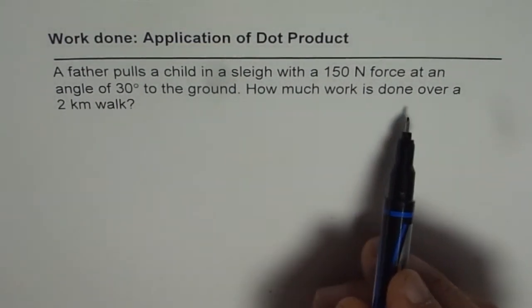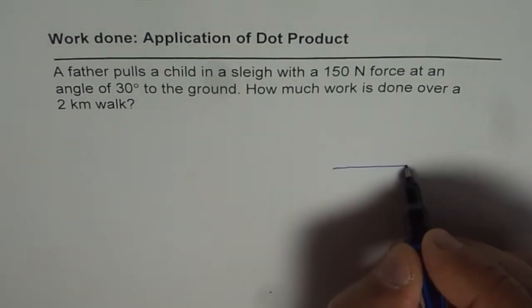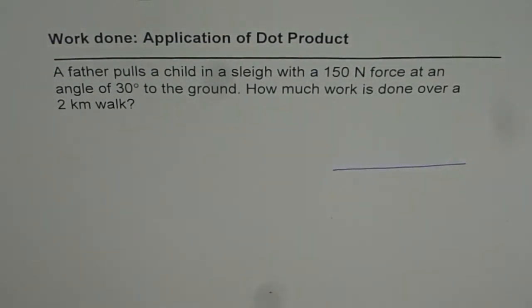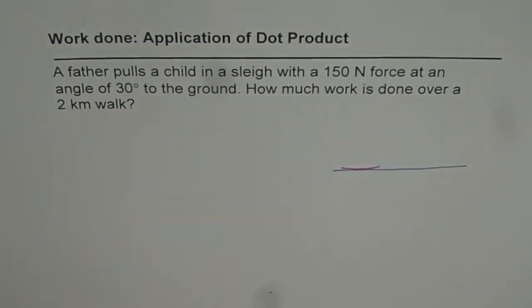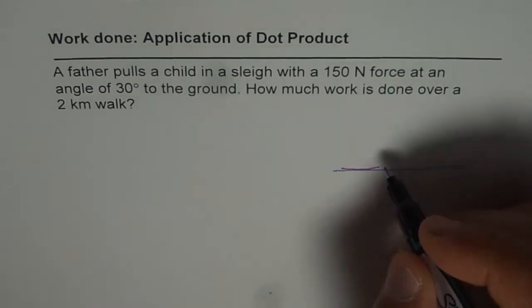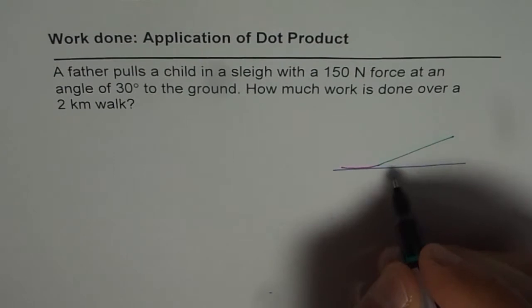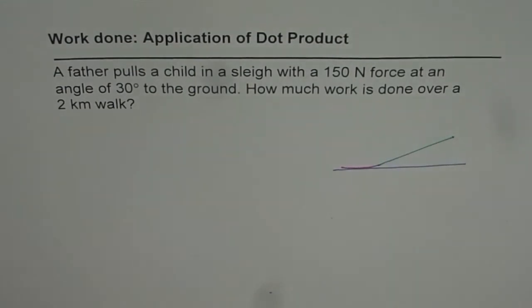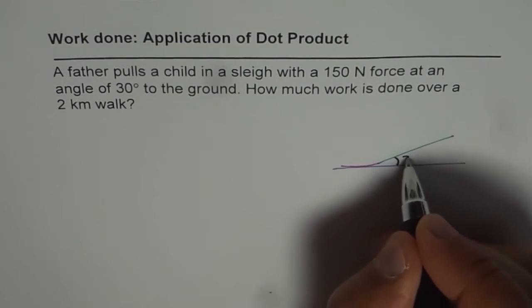How much work is done over a 2 kilometer walk? Let's say that is the ground, and this is the sledge. Father is pulling at an angle of 30 degrees to the ground. So let's say that is 30 degrees to the ground. So what we are saying here is that the angle is 30 degrees.